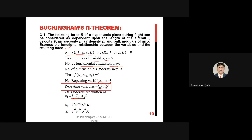The second Pi term is written as l^a2 · v^b2 · rho^c2 · mu, where mu is the non-repeating parameter. In selecting Pi terms, the first three variables must always be the repeating variables, and the remaining non-repeating parameters are assigned one per Pi term. In this fashion all Pi terms are selected.